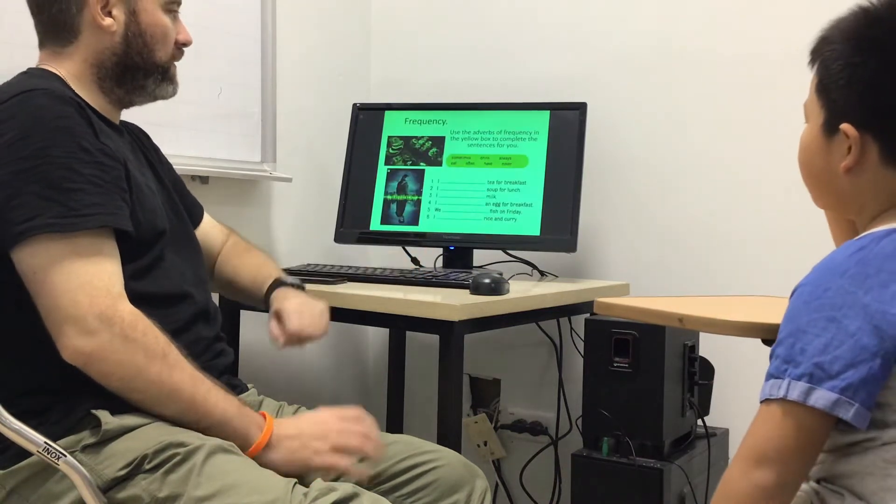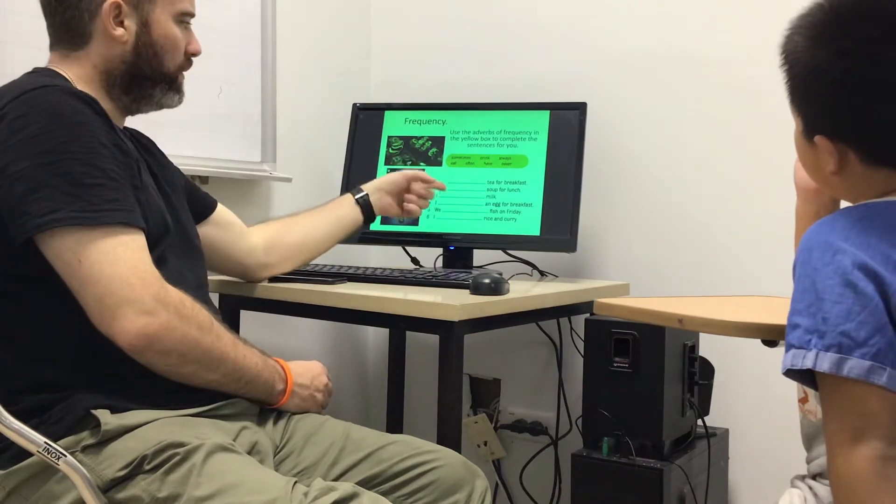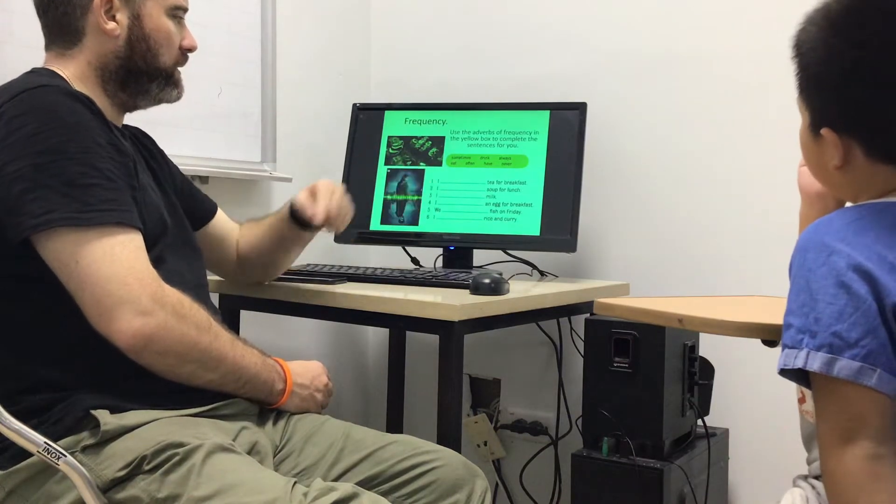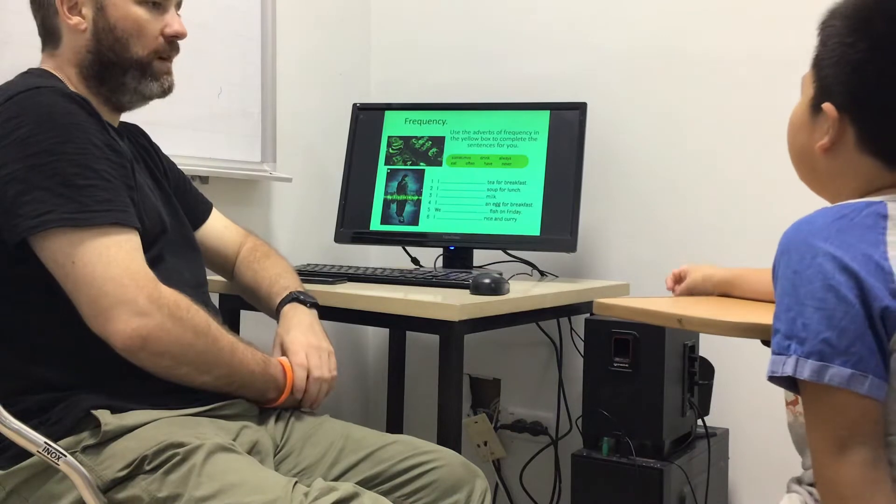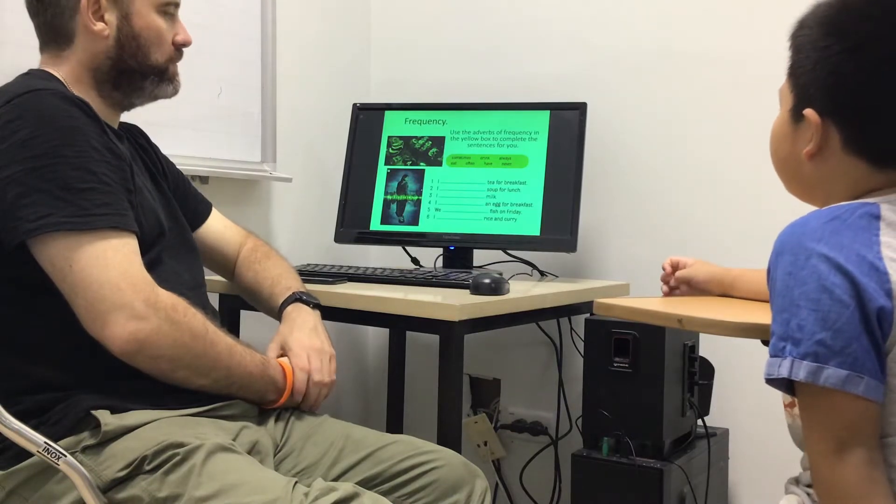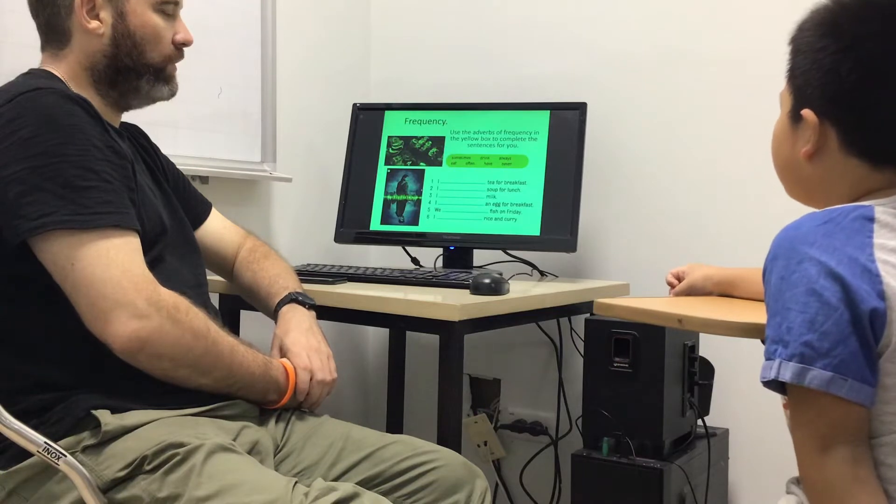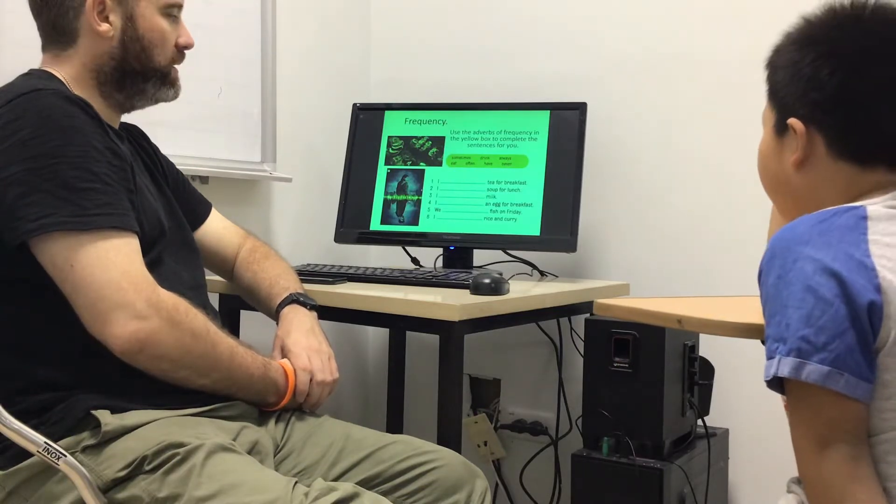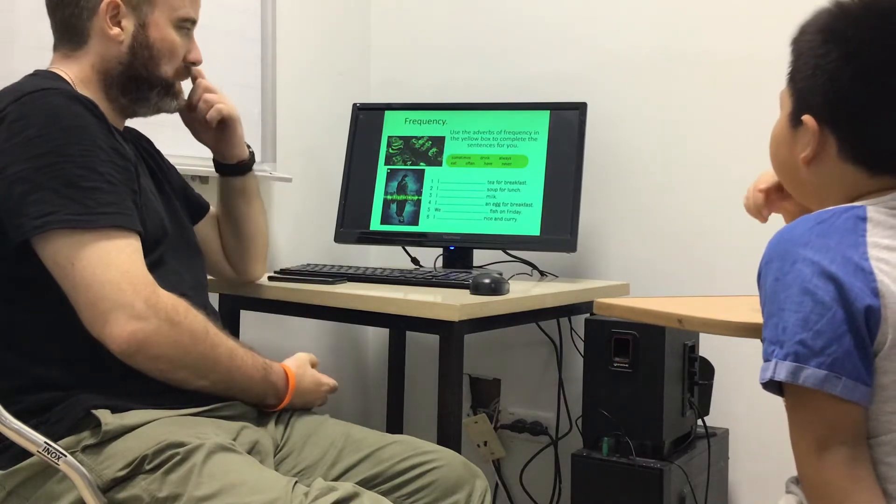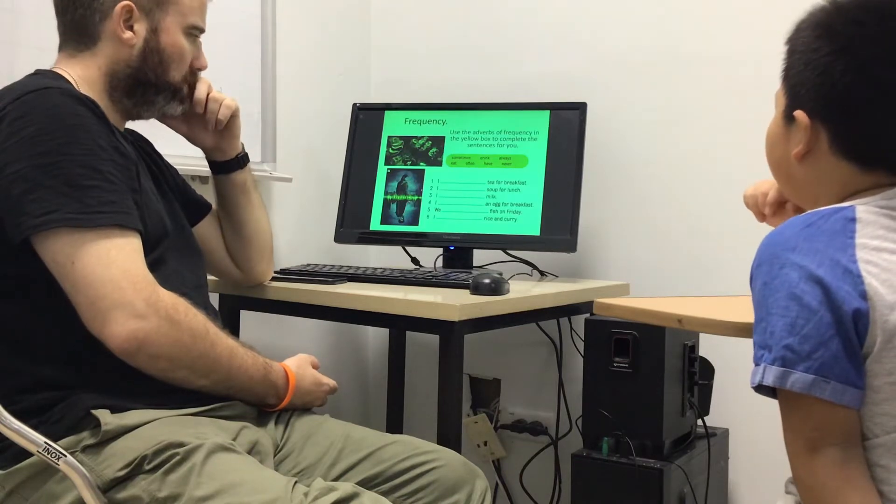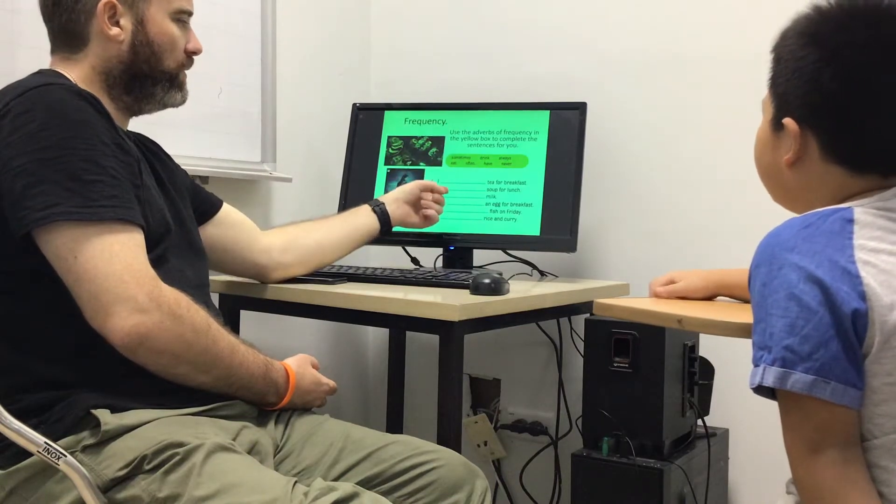So here, as you know, we use an adverb and a verb. Number what? I sometimes drink tea for breakfast. Number two. I sometimes drink tea for breakfast. That was it.